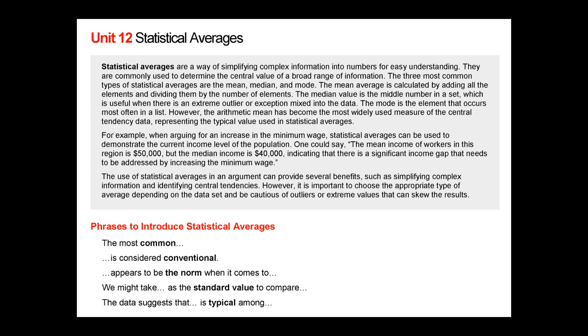For example, when arguing for an increase in the minimum wage, statistical averages can be used to demonstrate the current income level of a population. One could say, the mean income of workers in this region is $50,000, but the median income is $40,000, indicating that there is a significant income gap that needs to be addressed by increasing the minimum wage.